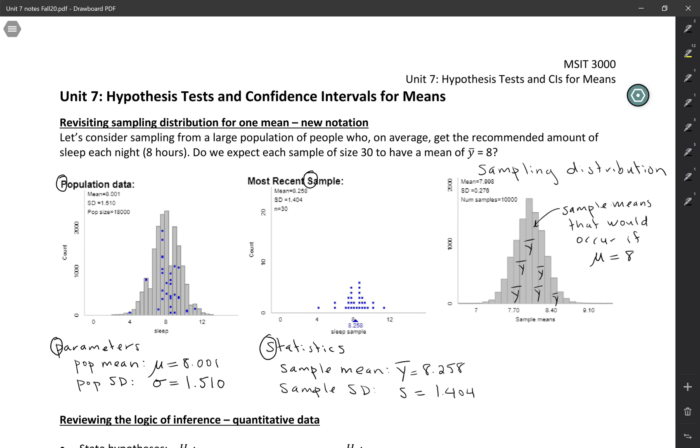And we've talked about this before. The reason for that is that sample means are much less variable than individuals. You might have individuals that have really high or really low sleep times, but when you take a sample of size 30 and average them, it starts to balance out. So the spread of the sampling distribution is much smaller. And that value, the spread of the sampling distribution, is called the standard error.